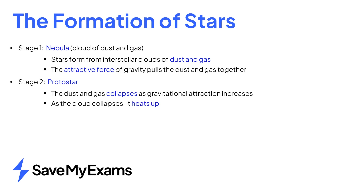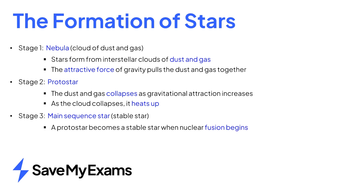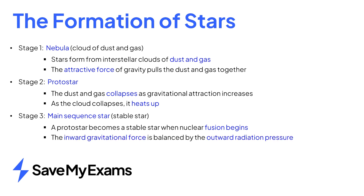Then, as the cloud collapses, its internal temperature rises. The main sequence is the third stage in the life cycle. This stage begins when nuclear fusion in the star's core begins. The inward gravitational force is now counteracted by an outward radiation pressure, which allows the star to remain stable for a long period of time.